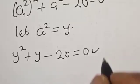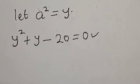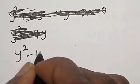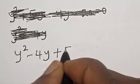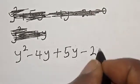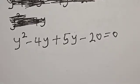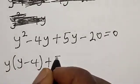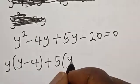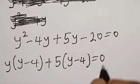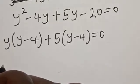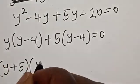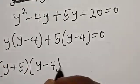This is a quadratic equation which can be solved by using the factorization method. We have y^2 - 4y + 5y - 20 = 0. Factoring gives us (y + 5)(y - 4) = 0.